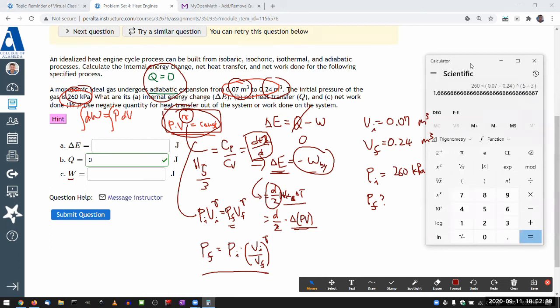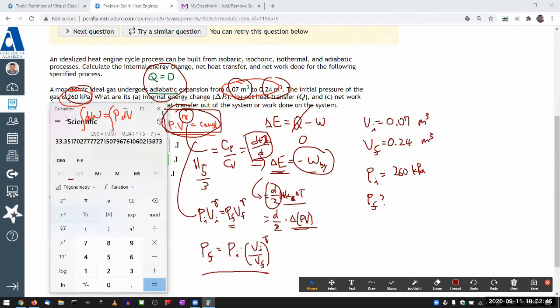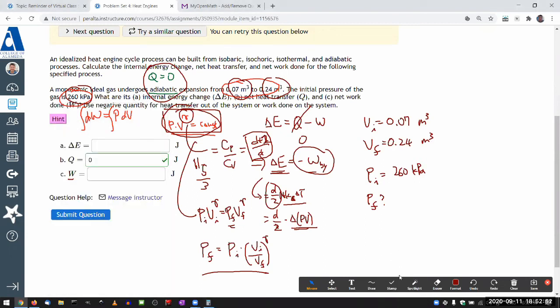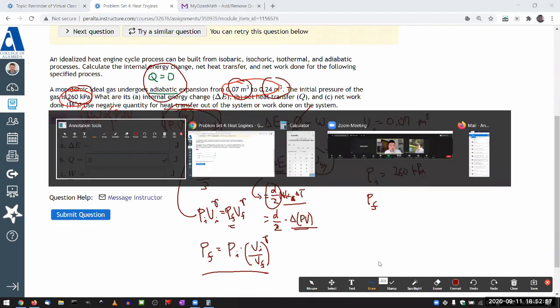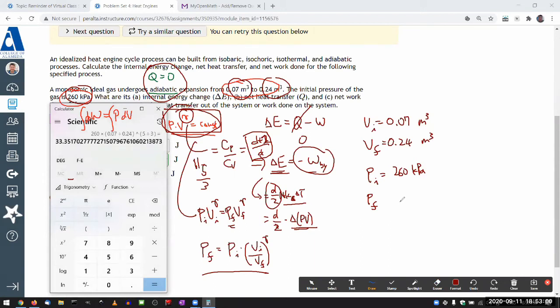So that gives me 33.4 kilopascal. And if you compare this with what answer you would have gotten for isothermal process, you should find that this pressure is a little bit less than what the isothermal process would have been. And that's because temperature actually changes. That's kind of what we are getting at when we do this calculation.